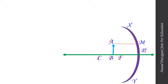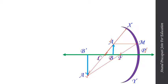Ray AM is incident at M on the concave mirror and after reflection it passes through the main focus of the concave mirror. Another ray is incident and after reflection it passes through the center of curvature and returns back along the same path, passing through the center of curvature. After the reflection from the concave mirror, we get A'B' as the image of the object AB.